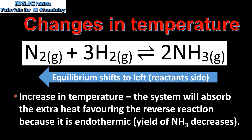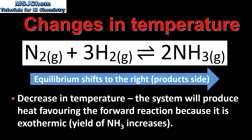If we increase the temperature in the Haber process, the system will absorb the extra heat, favouring the reverse reaction because it is endothermic, and the yield of ammonia will decrease. If we decrease the temperature, the system will produce heat, favouring the forward reaction because it is exothermic, and the yield of ammonia will increase — the equilibrium shifts to the right.